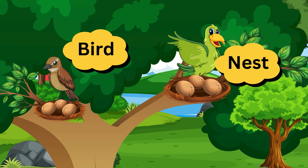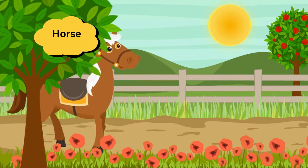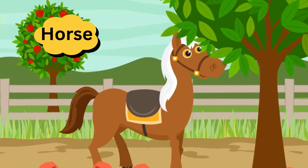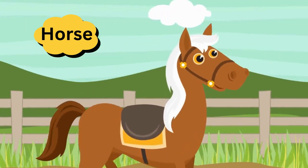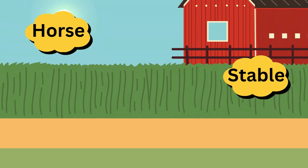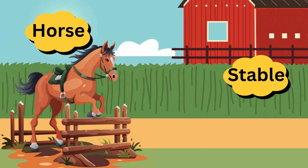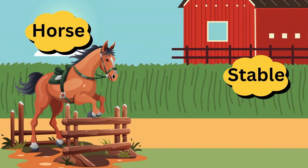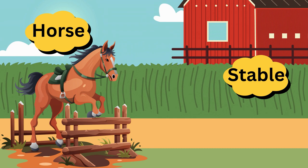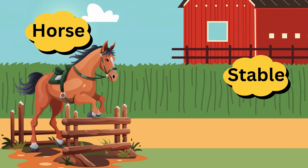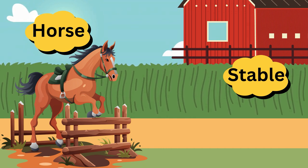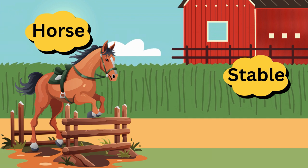Birds live in a nest. Bird — nest. Horse. Horse lives in a stable. Horse lives in a stable. Horse — stable. Horse — stable.